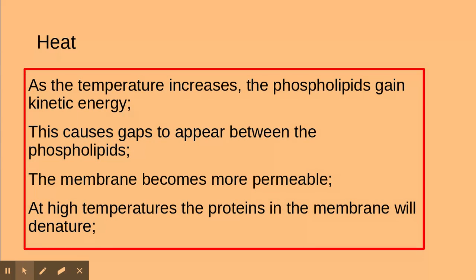This is taken directly from the mark scheme — you need to know these marking points, as they are very popular. As the temperature of the solution or the cells increases, the phospholipids gain kinetic energy. As those phospholipids gain kinetic energy, this causes gaps to appear between the phospholipids. It's really important that you say 'gaps' and not 'holes' — you get no marks for saying 'holes'. Therefore, as a result of these small gaps appearing between the phospholipids, the membrane becomes more permeable.